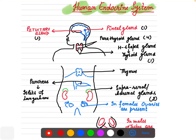Now let's talk about the location of endocrine glands in the human endocrine system. I have made a simplified diagram. In the brain, on the anterior side, is the pituitary gland. On the posterior side is the pineal gland. The pituitary is one in number and the pineal is also one.